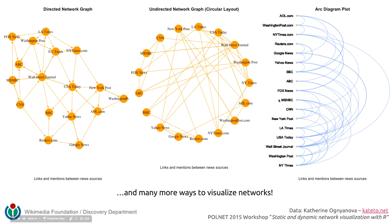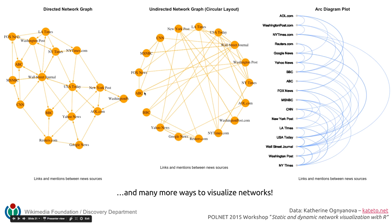There are different ways to visualize networks using network graphs. Note that 'graph' has a mathematical meaning, so these are statistical graphs of graphs. In this dataset we're looking at how different news sources link to and mention each other. On the left there's no particular structure, but in the middle a circular structure has been imposed on the network so you can see where the links are a little better. There's also an arc diagram plot as another option.